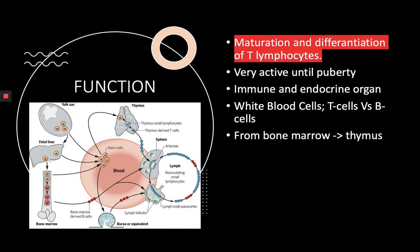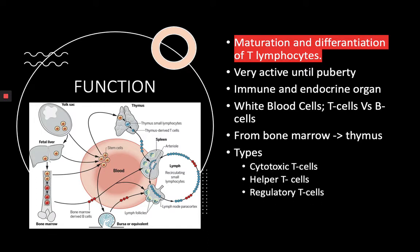T lymphocytes are called the first responders and defenders of the immune system when extra help is needed. They are made in the bone marrow, which is the spongy tissue within your bones, and when the T cells are still young and immature they will travel through the bloodstream into the thymus, where they will mature into different types of cells.